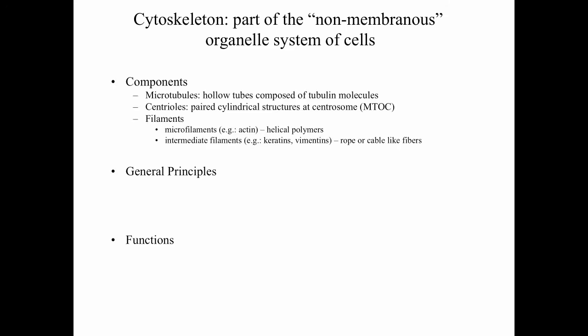The components of the cytoskeleton include microtubules — hollow tubes composed of tubulin molecules — and centrioles, which are paired cylindrical structures at the centrosome, the so-called microtubular organizing center. There are also two classes of filaments involved in the cytoskeleton.